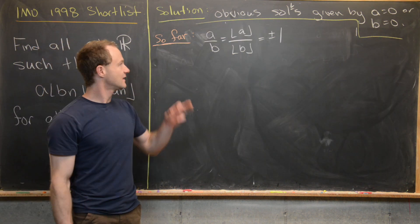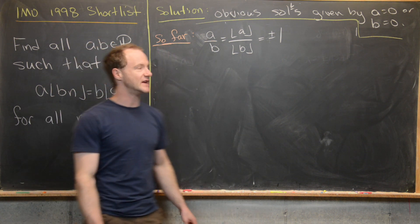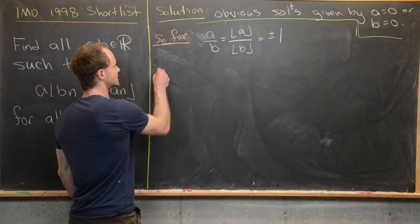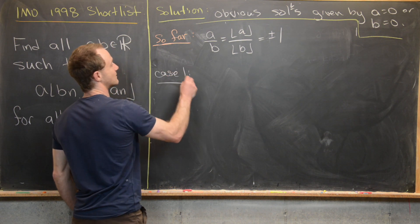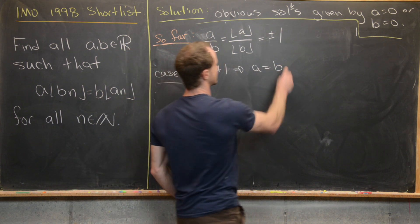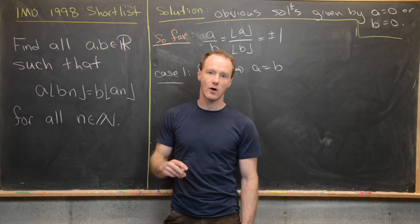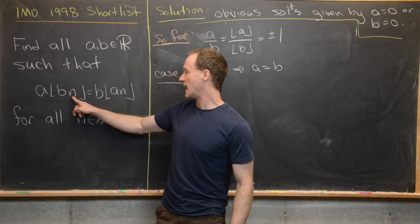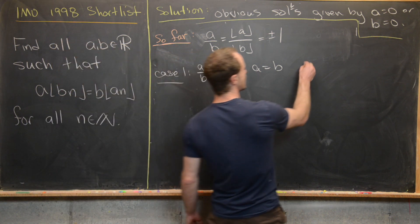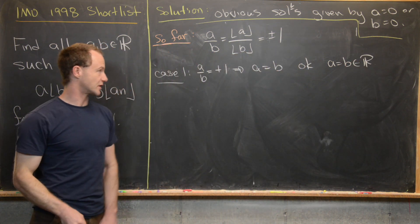So A over B equals plus or minus 1. Case 1: A over B equals positive 1, meaning A equals B. If A equals B, the original equation becomes A times the floor of A·N equals A times the floor of A·N, which is a tautology. So A equals B for any real number is a valid solution.